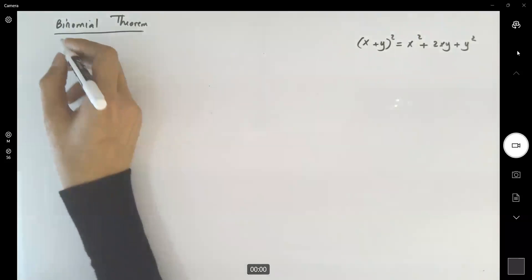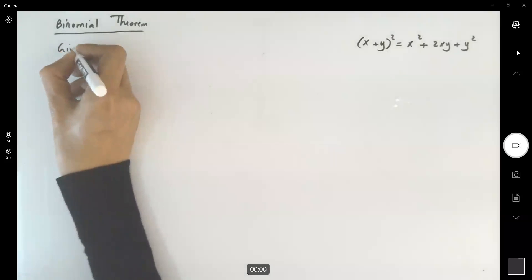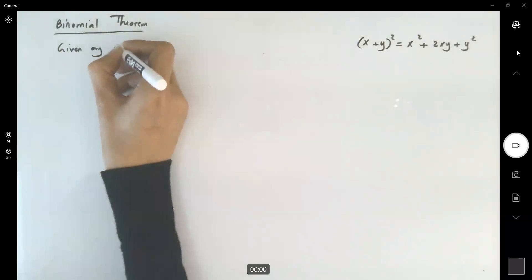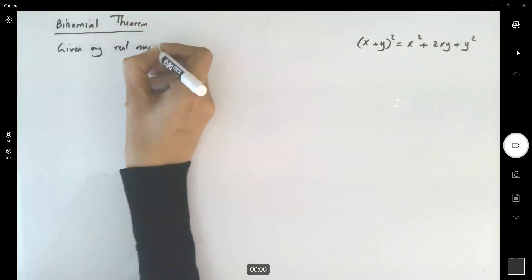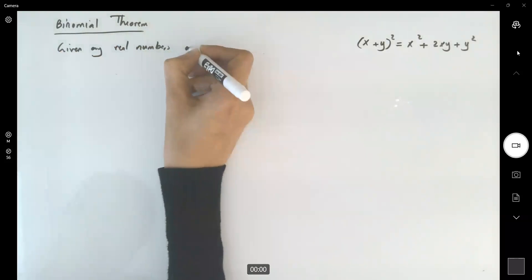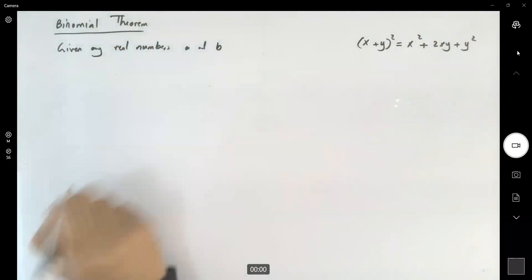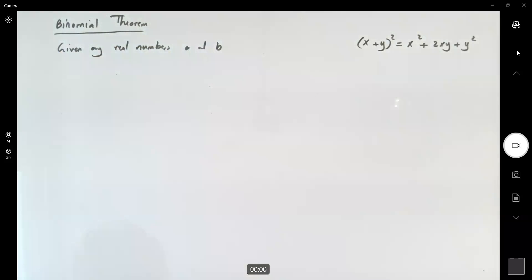Binomial theorem says given any real numbers a and b, and any non-negative integer n.